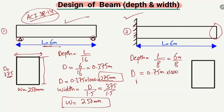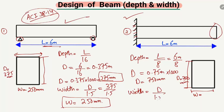Here L is 6 meters divided by 8, giving 0.75 meters. Multiplying by 1000 gives the minimum depth in millimeters: 750 millimeters. So the depth of the cantilever beam is 750 millimeters.